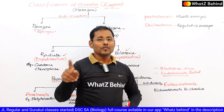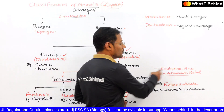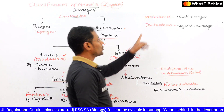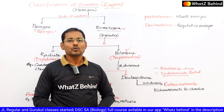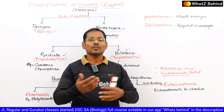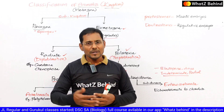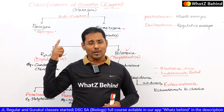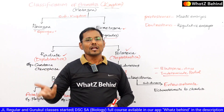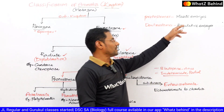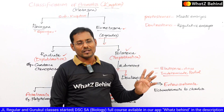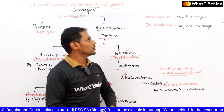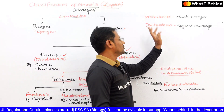If a question is asked from these two topics, you must remember the differences between Protostomia and Deuterostomia. One more thing: Protostomia has mosaic embryos. Mosaic embryos means the embryo shows many different colors or regions. So we can observe mosaic embryos in Protostomia, while Deuterostomia has regulative embryos.